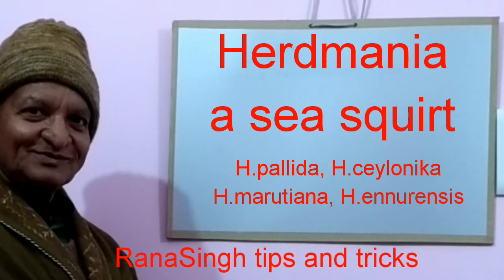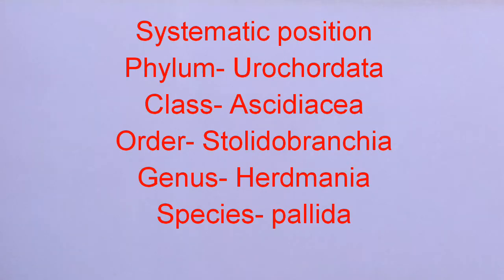Systematic position, that is classification of Herdmania: Phylum Urochordata, Class Ascidiacea, Order Stolidobranchia, Genus Herdmania, Species pallida.